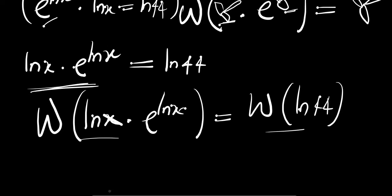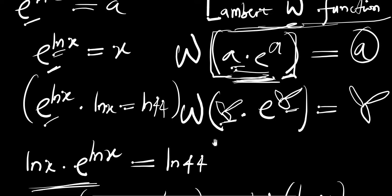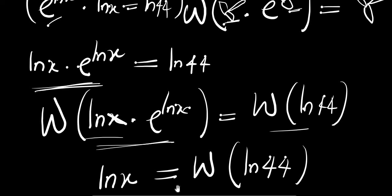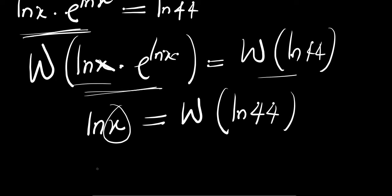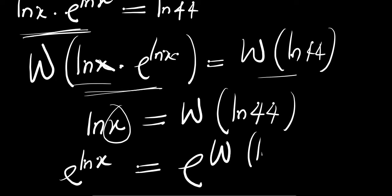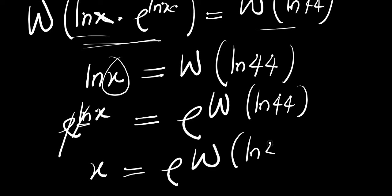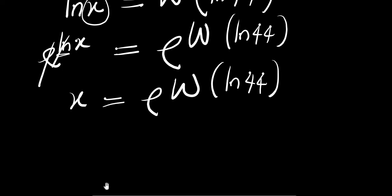When we apply the Lambert W function to the left side, we get simply ln of x, since W of a times e to the power of a equals a. So ln(x) equals W of ln(44). To eliminate the ln and solve for x, we introduce e on both sides, giving us x equals e to the power of W of ln(44).